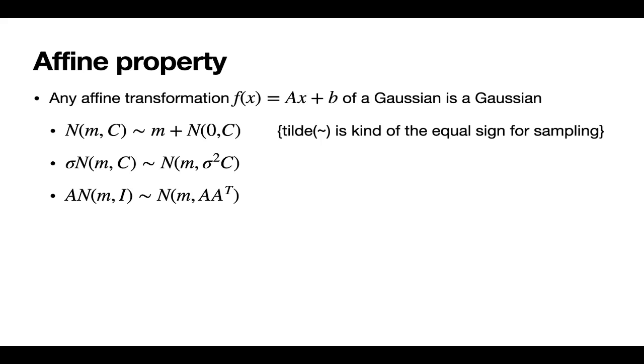But before we dive deeper into that you should know about the affine property of Gaussian distribution which essentially states that Gaussian distribution is closed under affine transformation. And that includes things such as scaling, translation, and rotation. And what that means to us is that we can manipulate the parameters of a normal distribution by for example taking the mean out of the sampling and we can also take out the scaling factor out of the covariance matrix and we can also decompose the covariance matrix and take out a component. And by the way the tilda sign here is essentially the equal sign for sampling. So for all these three equations the expression on the left and right sides of the tilde are equivalent.